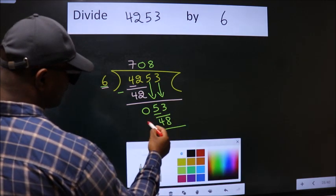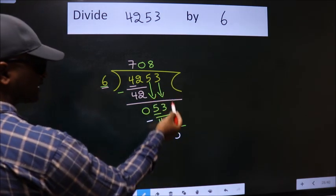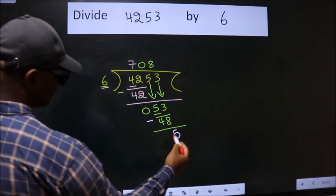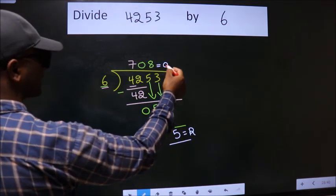Now, we subtract. We get 5. No more numbers to bring down. So we stop here. This is our remainder. This is our quotient.